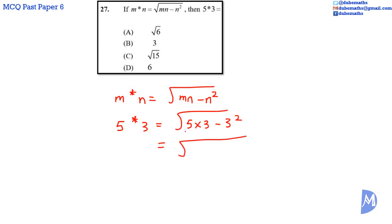Which is equal to the square root of 5 multiplied by 3 is 15, minus 3 squared or 3 multiplied by 3 which is equal to 9. 15 minus 9 is equal to 6. So we have the square root of 6. The answer is A.